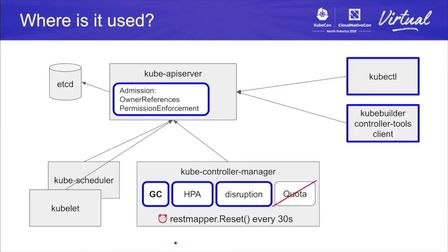Where are REST mappers used? We saw kubectl. The API itself has some use of REST mappers — there's a GC garbage collection-related admission plugin. But the main consumers, especially discovery-based ones, are the controllers in controller manager. Horizontal pod autoscaling can work for all resources that have a scale subresource — that's a polymorphic use case. REST mappings are also involved in pod disruption budget. The garbage collector is maybe the most interesting case, and discovery and REST mapping are deeply connected.